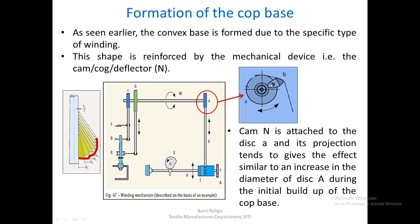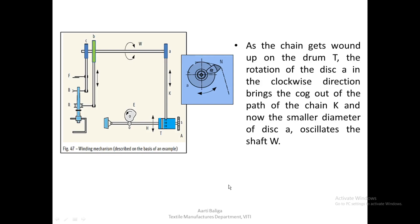Cog N is a small notch on disc A. During the initial build-up of the cop base, this notch acts as if disc A has increased in diameter. As the chain gets wound up on drum T due to the clockwise rotation of disc A, the cog moves out of the path of chain K, and the smaller original diameter of disc A is restored to oscillate shaft W normally.